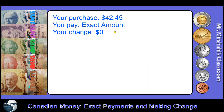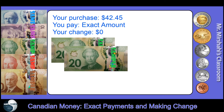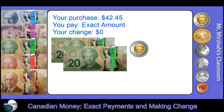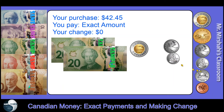Now for exact payment of $42.45 — you shouldn't get any change back. Can I use $50? No, that goes over. Can I use $20? Yes — two $20s makes $40. Can I do three? No, that goes over. I need $42 — so two $20s and a toonie makes $42. Then I need 45 cents: a quarter makes 25 cents, a dime makes 35 cents, another dime makes 45 cents. That's exactly $42.45.